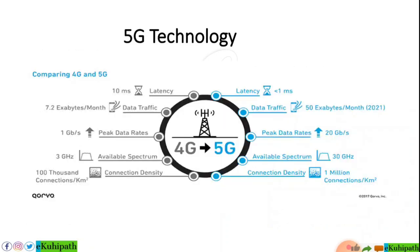Comparing 5G technology to 4G, the first term is latency — the delay in sending and receiving data. For 4G, latency is about 10 milliseconds. For 5G, it is less than 1 millisecond. This means that within a fraction of a second, data can be transferred. This is the latency advantage of 5G.